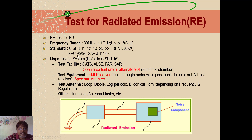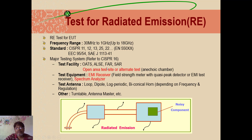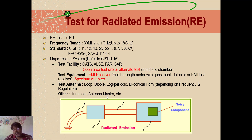Testing facilities for radiated emission include open area test sites, ALC, FAR, and SAR — both near field and far field testing. Equipment needed includes a receiver and spectrum analyzer. Test antennas depend on frequency: loop antenna, dipole antenna, log-periodic, or biconical antennas are used depending on frequency and regulations. An antenna mast is also needed so we can change the antenna types. So that is what is required for the RE test.